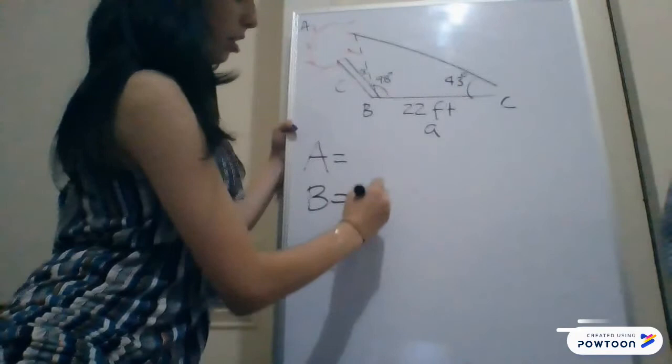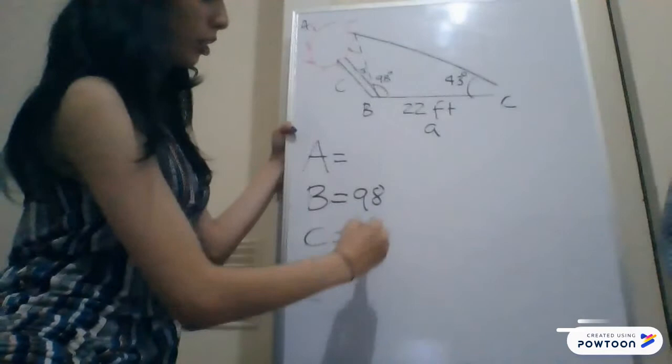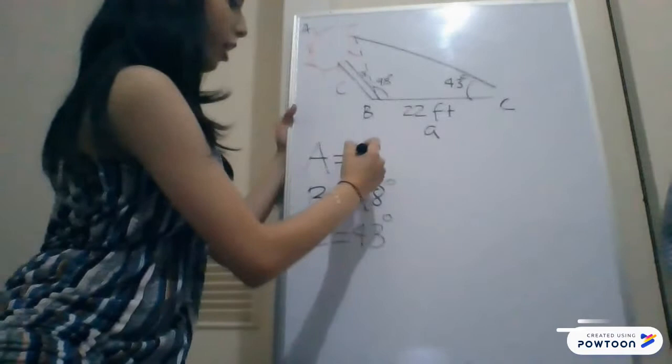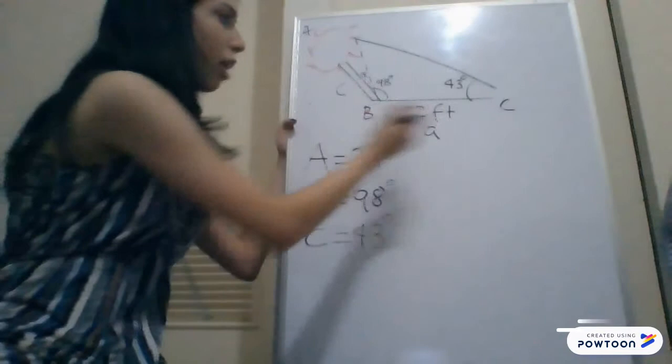So angle B will be 98. And you have angle C also, because this problem already gave it to you, and it's 43. So, by adding these two angles, it gives you 141. So if you subtract 180 minus 141, you have angle A, which will be 39 degrees.